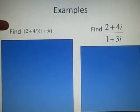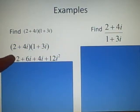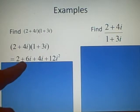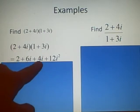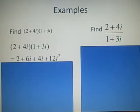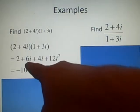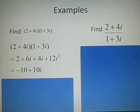Example one is a simple multiplication: find (2 + 4i)(1 + 3i). We simply multiply the brackets out, giving 2 plus 6i plus 4i plus 12i-squared. The i-squared is minus 1, so we have 2 minus 12, which is minus 10. And 6 plus 4 gives us 10i. So the solution is minus 10 plus 10i.